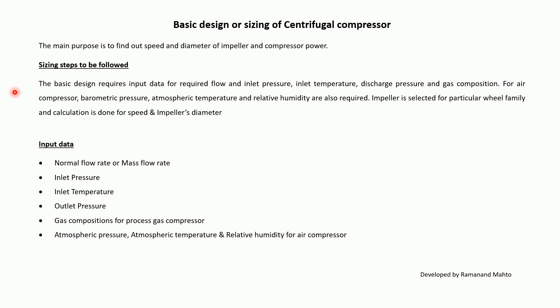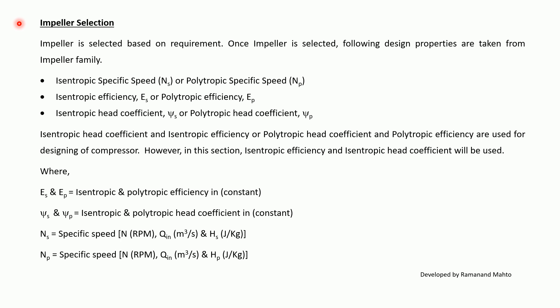The input data required includes normal volumetric flow rate or mass flow rate, inlet pressure, inlet temperature, output pressure, and gas composition for gas compressors. For air compressors, we need atmospheric pressure, atmospheric temperature, and relative humidity. The impeller is selected based on the requirement, and once selected, the following design properties are taken from the impeller family: isentropic specific speed, polytropic specific speed, isentropic efficiency, polytropic efficiency, isentropic head coefficient, and polytropic head coefficient.